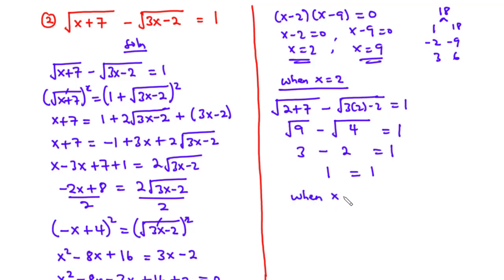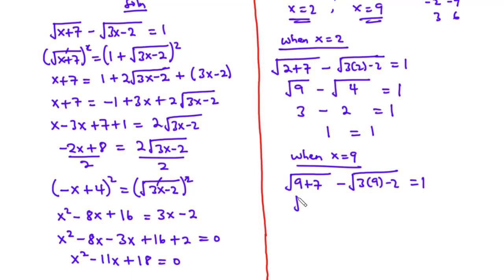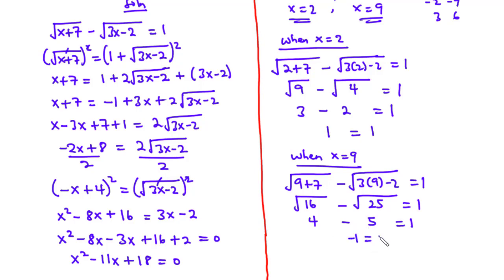Now let's test for when x equals 9. We have the square root of 9 plus 7 minus the square root of 3 times 9 minus 2 equals 1. 9 plus 7 is 16, and 3 times 9 minus 2 is 25. The square root of 16 is 4, and the square root of 25 is 5. 4 minus 5 is negative 1, and since negative 1 is not equal to 1, x equals 9 is not a solution to the original equation — it is an extraneous solution. Therefore, x equals 2 is the only solution.